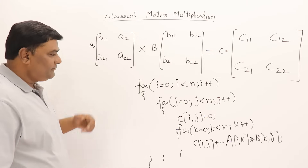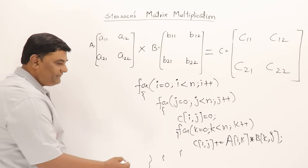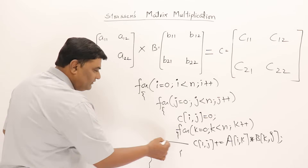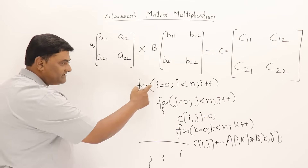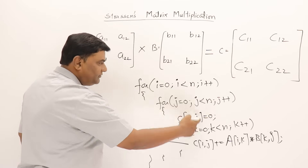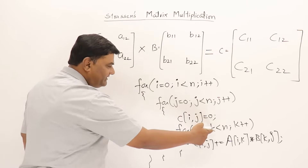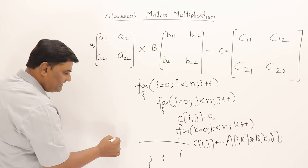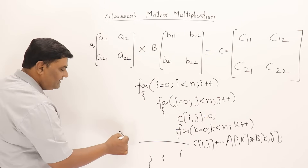What will be the time complexity if three for loops are there? Each statement is inside three for loops each running N times, so the time complexity will be N cubed.